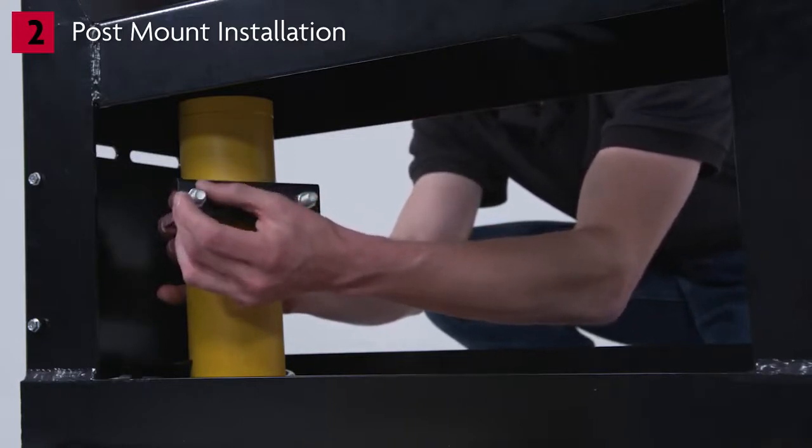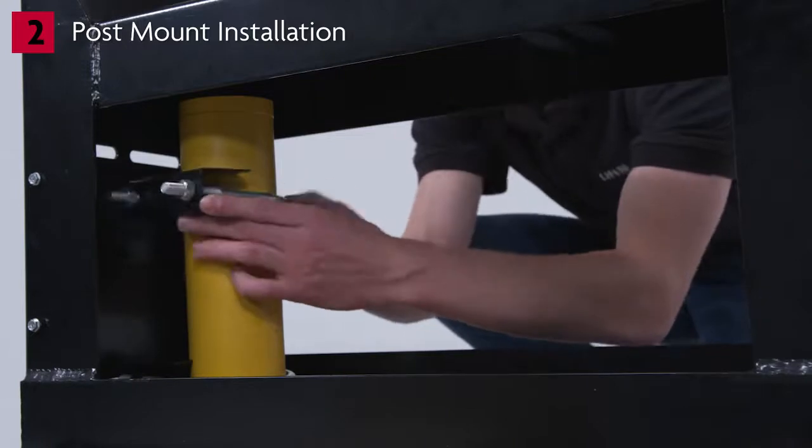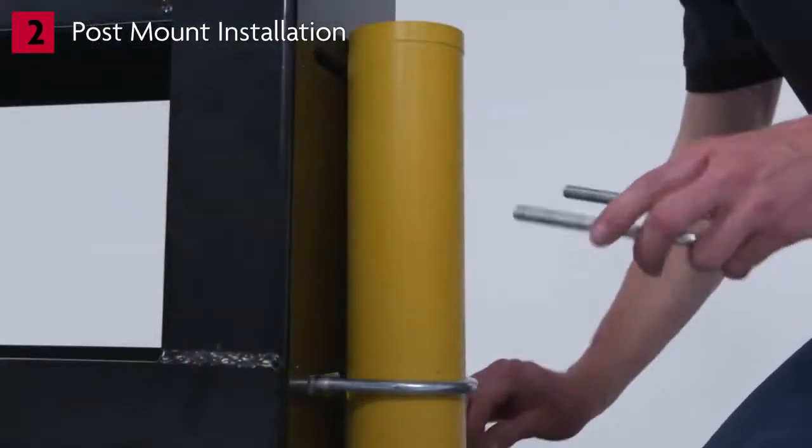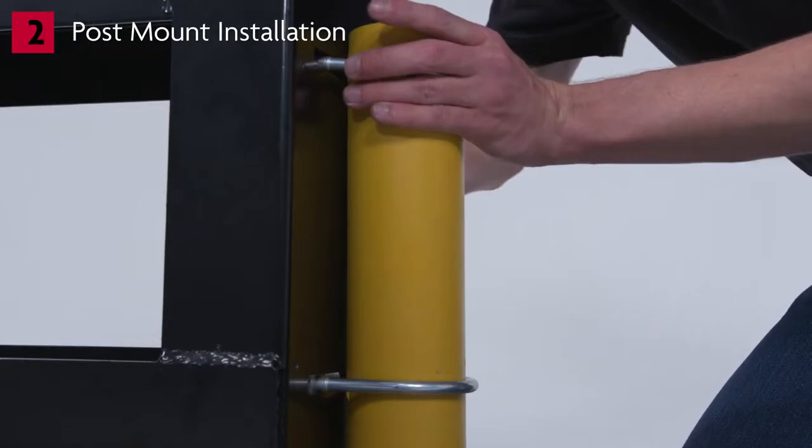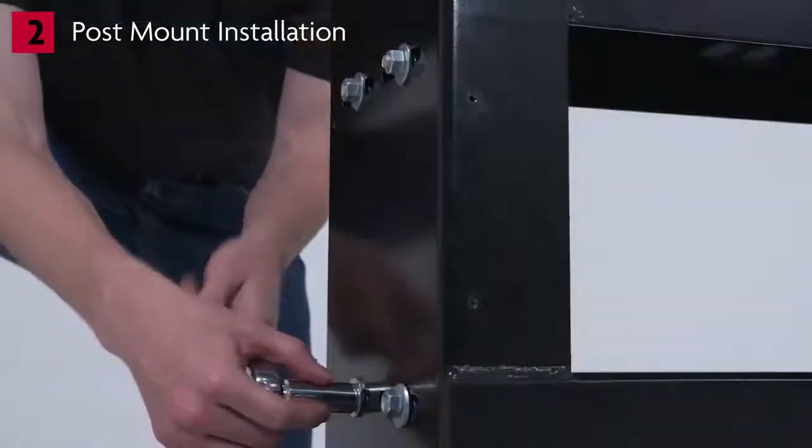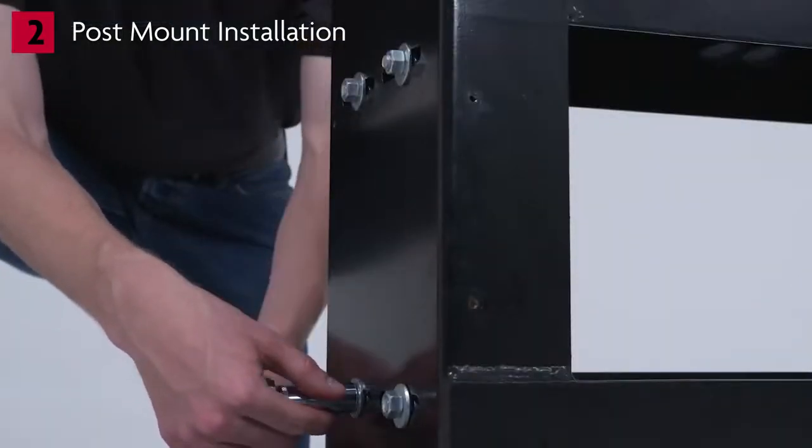Note that one set of the posts will mount on the inside of the riser stand and the second set of posts will mount outside of the riser stand outer plate. Tighten the riser stand to the posts.